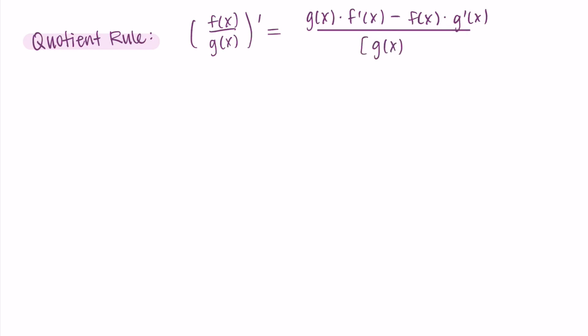We have a way to say this to remember it. I call f the "high" function since it's on top of the fraction, and I call g the "low" function since it's in the denominator. So we can read the quotient rule as: low d-high minus high d-low, all over low squared. Here "d-high" and "d-low" correspond to the derivative of the high function and the derivative of the low function.